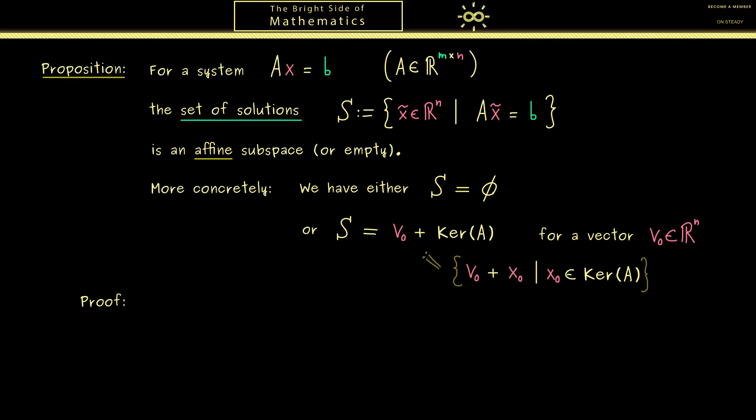Now I want to write down the proof of this proposition. In the case that the set of solutions S is not the empty set, we can assume that at least one vector v_0 exists. This means now, in the case that at least one solution exists, we can show that S is of this form. Therefore, the first conclusion we can make here is that Av_0 = b, because that's the definition of S—that's the definition of being a solution of the system.